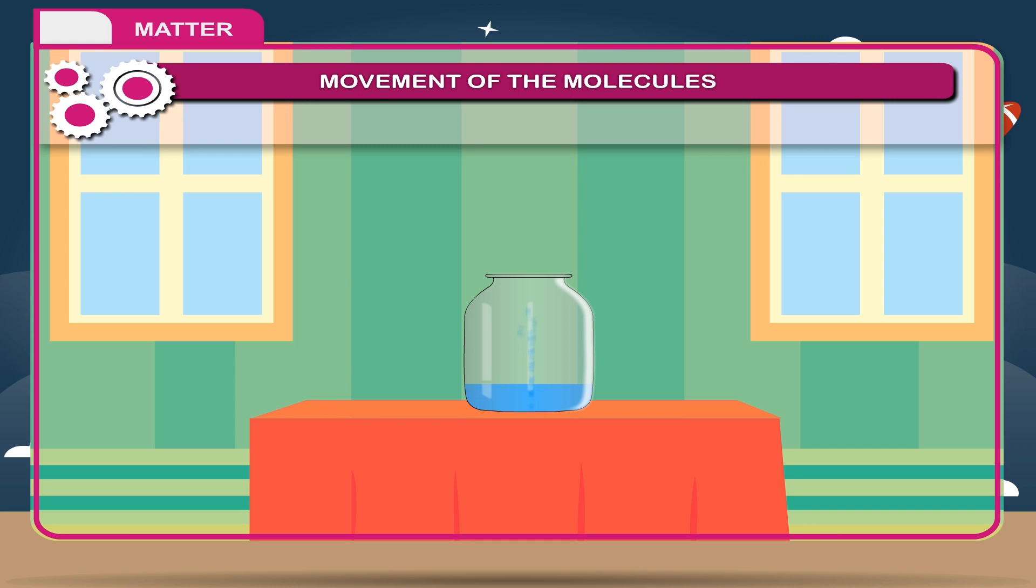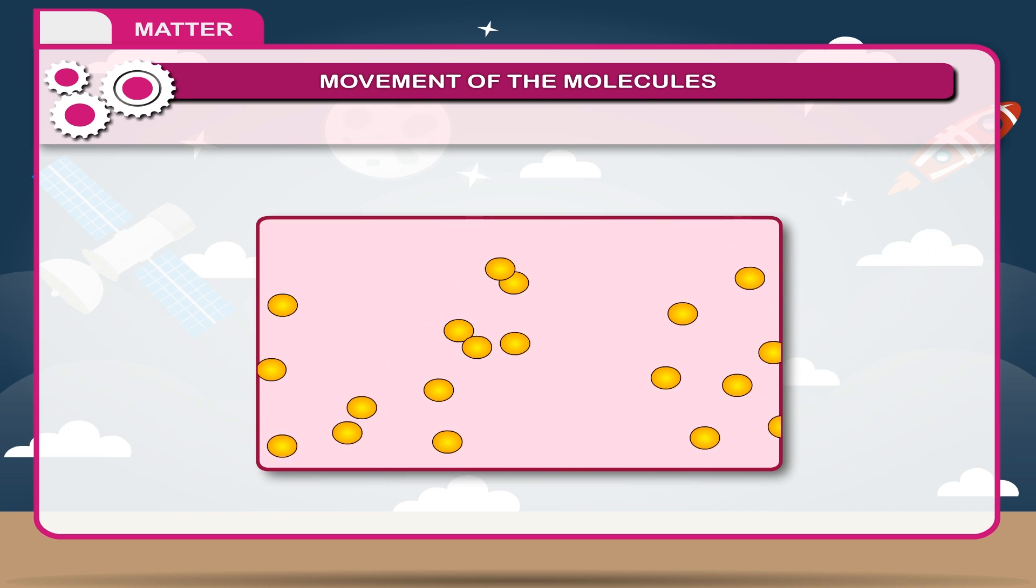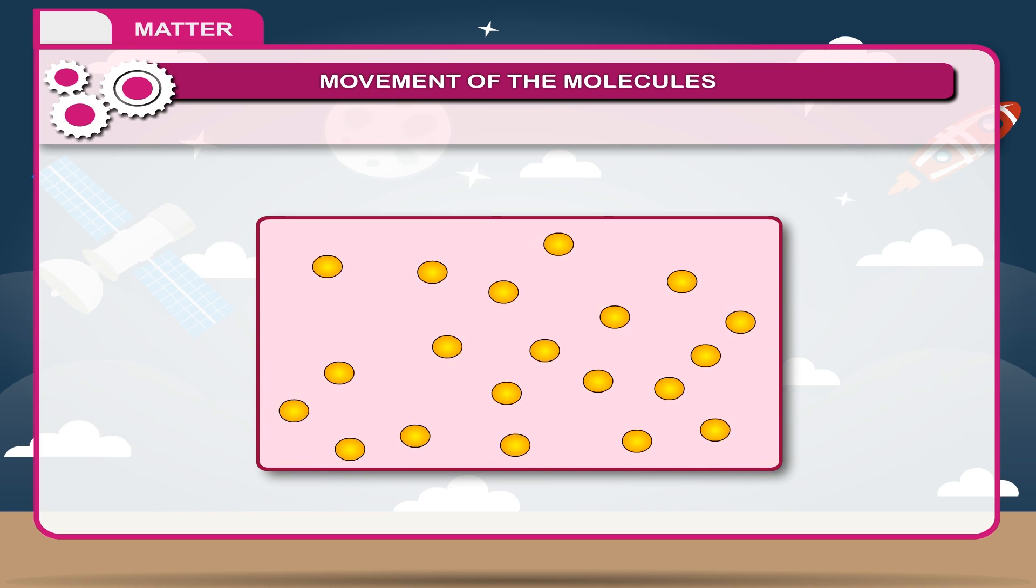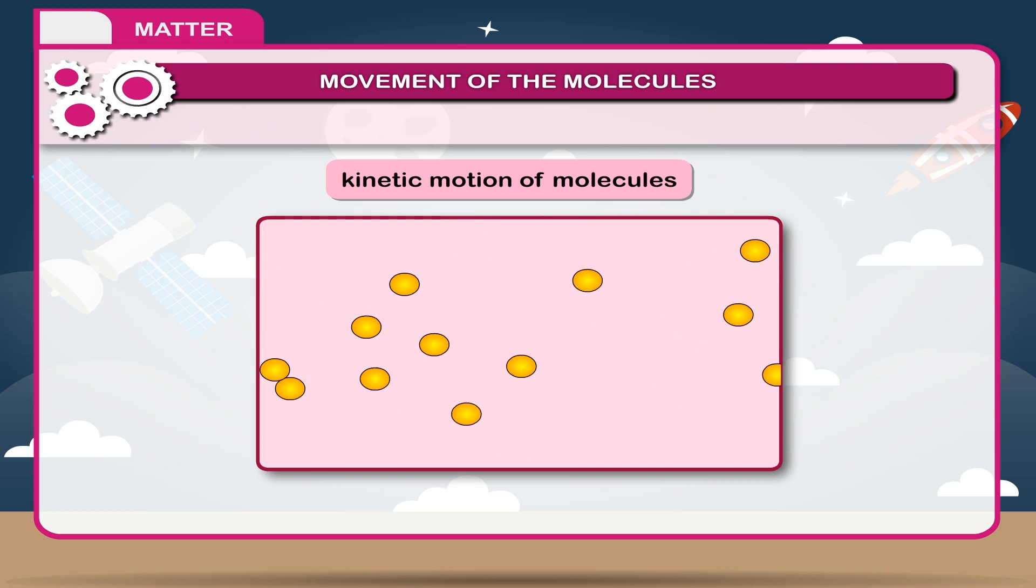Example 2: Open a bottle of perfume in a room. You will experience its smell in every corner of the room. These examples prove that particles are in a continuous motion without showing any tendency of stopping. This phenomenon of random motion of molecules is known as kinetic motion of molecules of a matter.